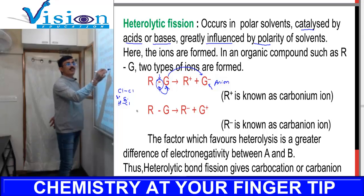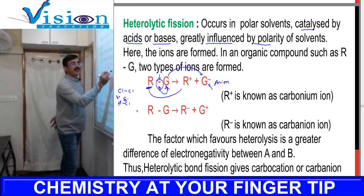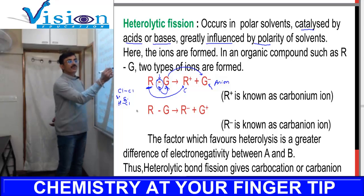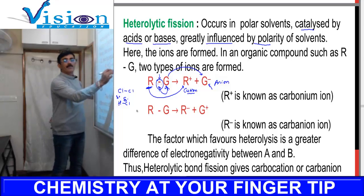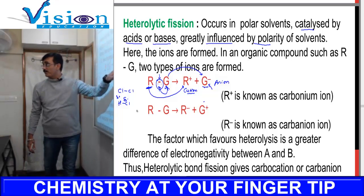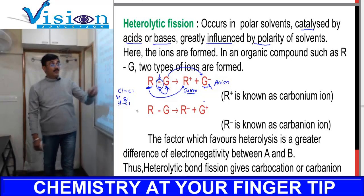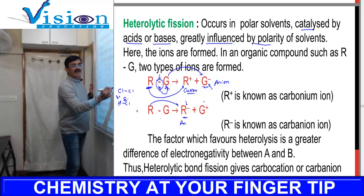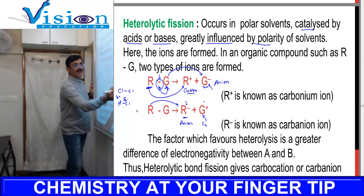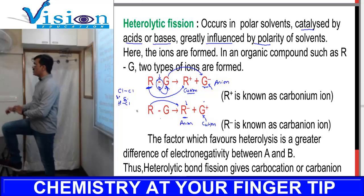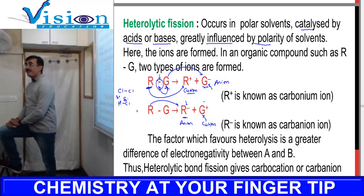The alkyl group that loses the electron loses both electrons to the other group. So in heterolytic fission, one fragment becomes an anion (taking both electrons) and the other becomes a cation. Homolytic fission gives free radicals, whereas heterolytic fission gives a cation and an anion.